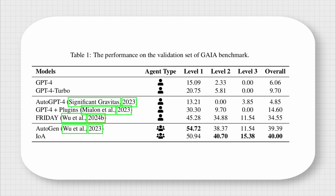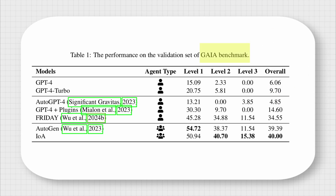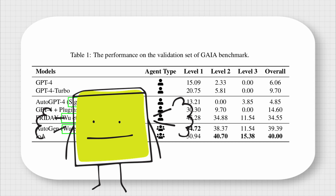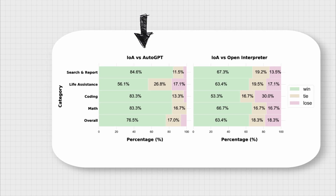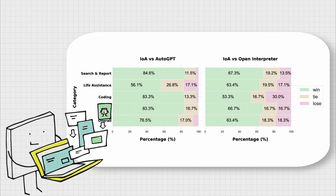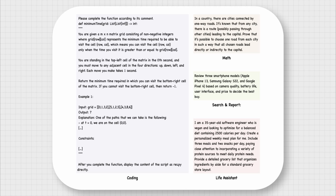IOA outperformed both single LLMs such as GPT-4, as well as other agentic systems such as AutoGen, across a general AI assistance benchmark — even in the more challenging level 2 and level 3 tasks, which demand advanced reasoning and intricate collaboration. The IOA system also outperformed both AutoGBT and Open Interpreter in various testing categories such as math, coding, and search and report, which shows IOA's proficiency in gathering and synthesizing information as well as in collaborative problem solving. Feel free to pause the video to read these example instructions across the four mentioned categories included in the IOA open-ended benchmark.